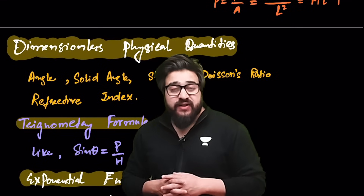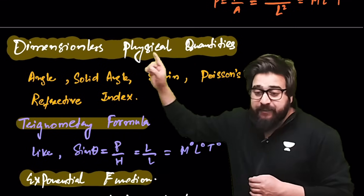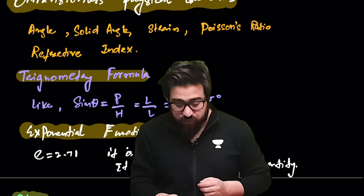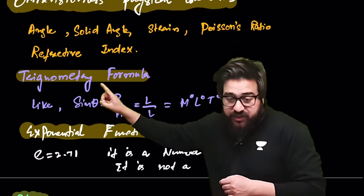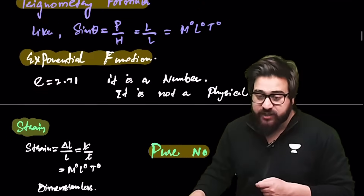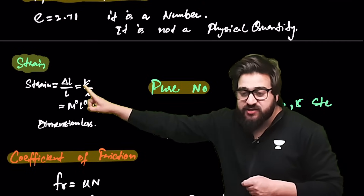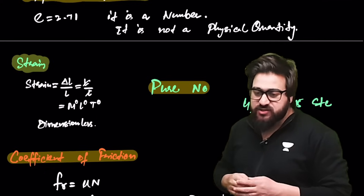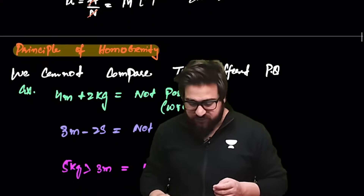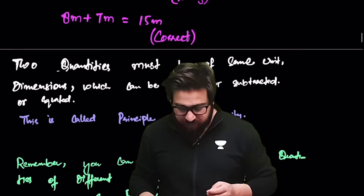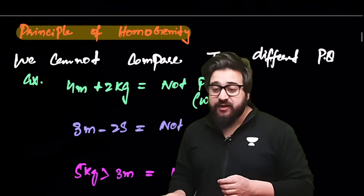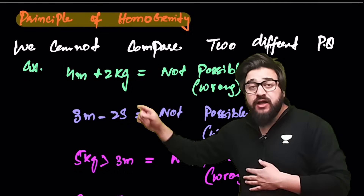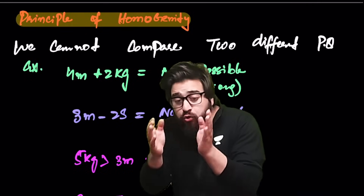Dimensionless physical quantities have no dimensions, like trigonometric functions, exponential functions, and strain. Strain is ΔL/L, so the lengths cancel and it becomes dimensionless.